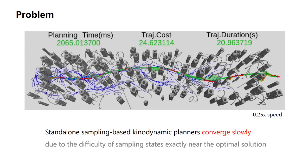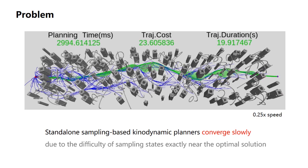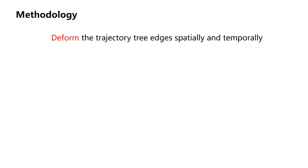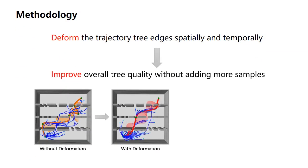We propose to improve the convergence by incorporating local optimization. In the process of tree growing, the edges are deformed spatially and temporally, and the overall tree quality is improved without adding more samples. Thus, the convergence is accelerated based on a better-organized tree structure.